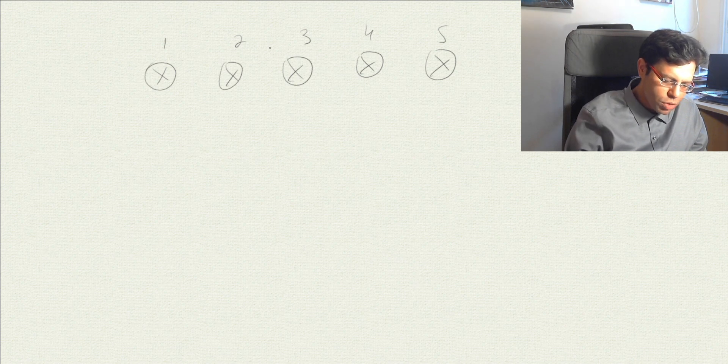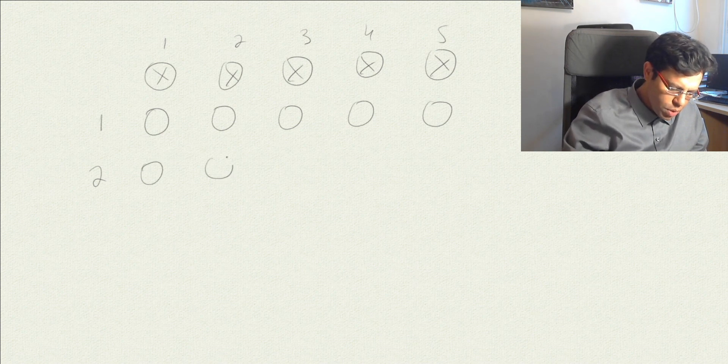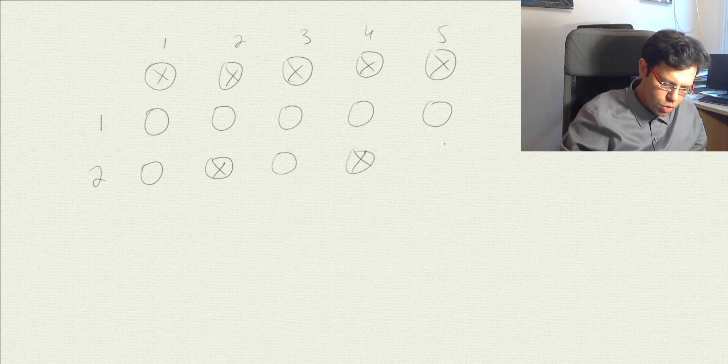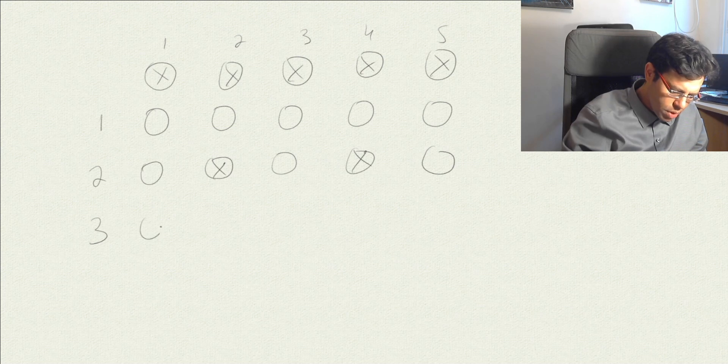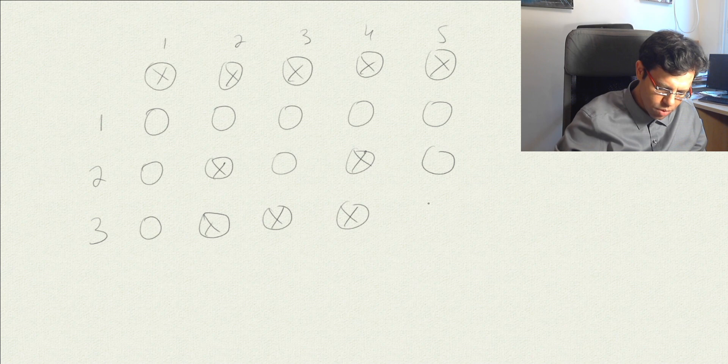Suppose that those are the numbers 1, 2, 3, 4, 5. Now, the first person enters and he turns all the light bulbs on. Then the second person enters and he changes the state of every second lamp. So then he turns this one off, 3 he's not touching, he turns this one off, and this he's not touching. Then the third person enters the room, and this one was off so he's not touching it. Then he turns off the third lamp, and the fourth was turned off, and he doesn't get to touch the fifth.